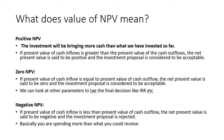We calculate the present value of future cash flows and compare it to the present value of what we invested. If the result is positive, the investment is considered acceptable. Zero NPV also means the investment is acceptable, but we need to look at other parameters like IRR to make the final decision. Negative NPV means the present value of cash inflows is less than the investment — the proposal is rejected because you are spending more than what you receive.